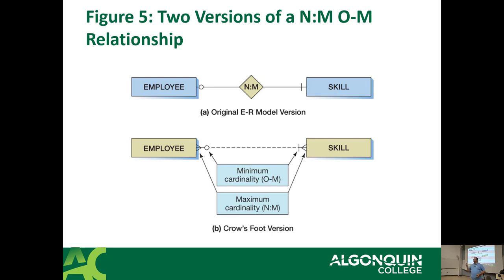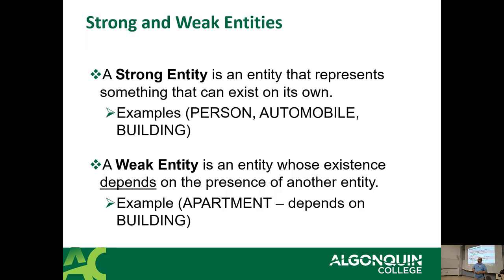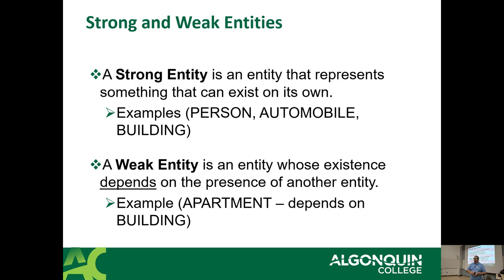We're about to dive into something called strong and weak entities. A strong entity is an entity that can exist on its own — a person or a car, for example, can exist and identify itself. A weak entity is an entity whose existence depends on another piece of information. For example, a building can exist without an apartment, but an apartment cannot exist without a building. A weak entity is basically any piece of data that cannot exist without something to define it.